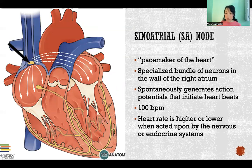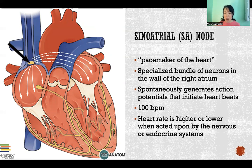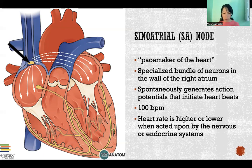If left to its own to just generate heartbeats, it would beat 100 beats per minute. Of course, we know that our heart rate fluctuates and is rarely at exactly 100 beats per minute — it's usually above or below. So we have other influences that act on the sinoatrial node to cause it to fire faster or slower, and that's how we control our heart rate.